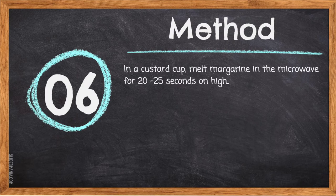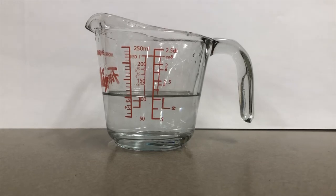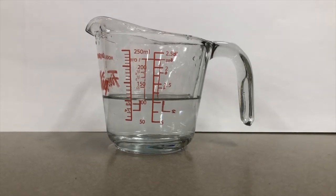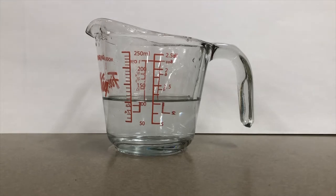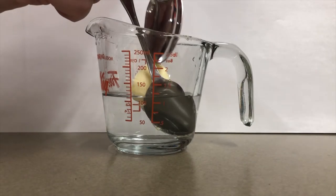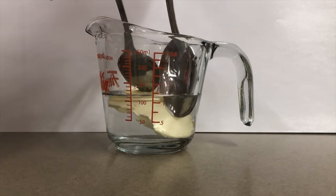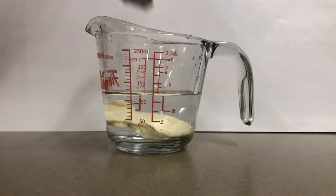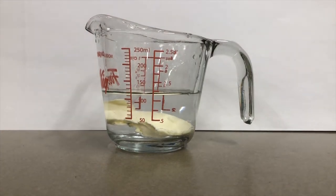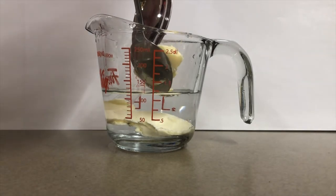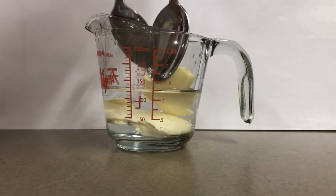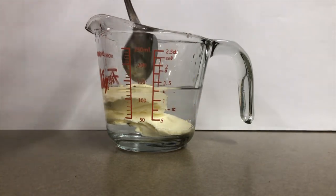Step six: in a custard cup, melt margarine in the microwave for 20 to 25 seconds on high. To measure margarine, use the liquid displacement method: put 100 milliliters of cold water into a liquid measure, then slowly lower the margarine into the liquid measure, pushing it underneath the water line. Use a spoon to push it to the bottom of the liquid measure so it doesn't float.